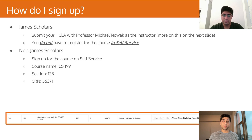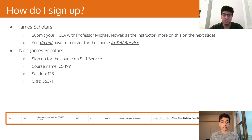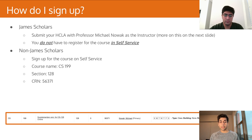So how do you sign up? It depends on whether you are a James Scholar or not. If you are a James Scholar, you should submit your HCLA with Professor Nowak as the instructor — more on this on the next slide. You do not have to register for the honors course in self-service, but you do have to be registered in the regular CS128 class. If you are not a James Scholar, feel free to sign up for the course in self-service — you can look up CS199 section 128. The CRN is below on the slide. Please sign up in self-service if you are not a James Scholar to get credit for doing all the work.